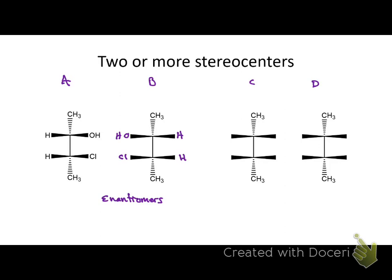What you can do is not switch both groups — you can just switch one, and then it's not an enantiomer. It's a stereoisomer, but it's not a mirror image. Remember, if you have a mirror image, that's your enantiomer. So I'm going to switch the top group and leave the bottom alone. The top is a mirror image but the bottom is not. These are called diastereomers.